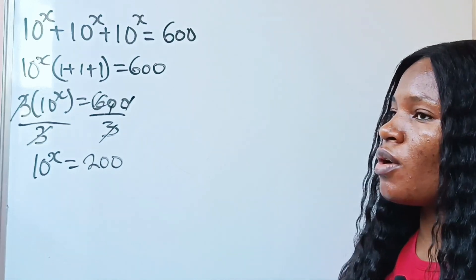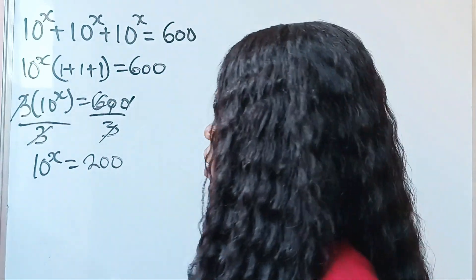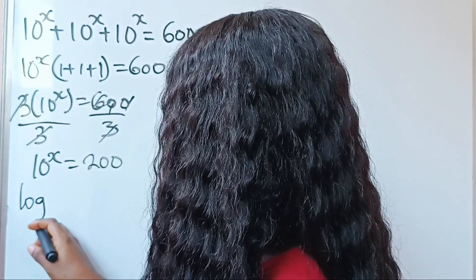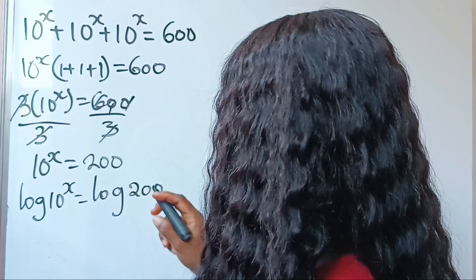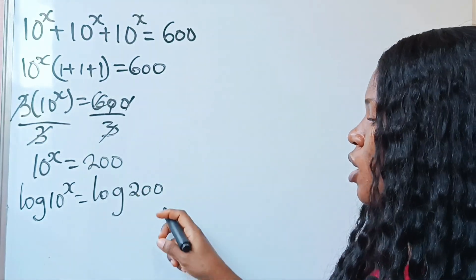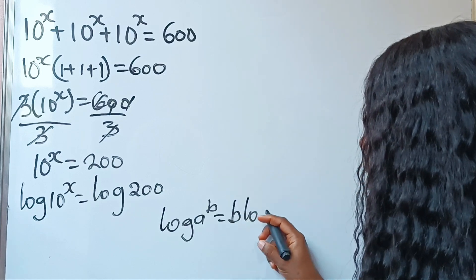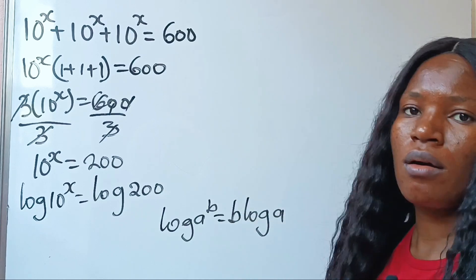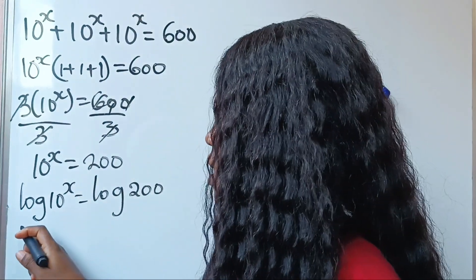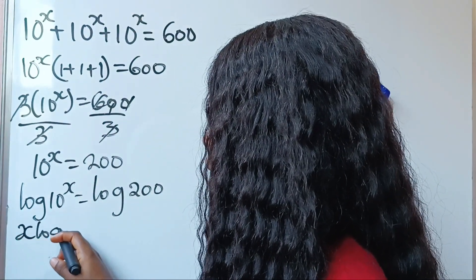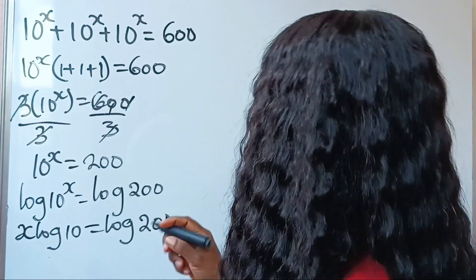The only option we have left is to introduce log on both sides of the equation. So we are going to have log 10 to the power of x is equal to log 200. Recall that log a raised to the power of b is equal to b multiplied by log a. So that means we can write this as x multiplied by log 10 is equal to log 200.